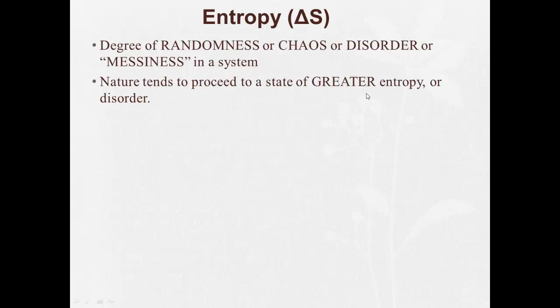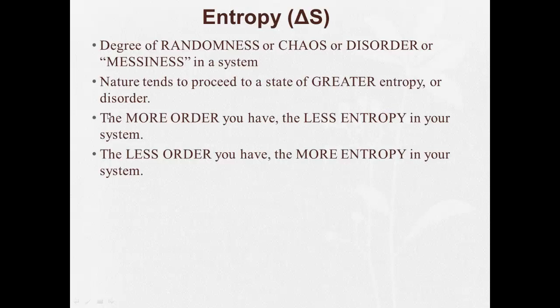It's going to become more disordered, which is a little funny when dealing with more disorder. It seems like a double negative. All right, so the more order you have, the less entropy in your system. The less order you have, more entropy in your system. So more order is like neater. Neater is less entropy. Messier, less order, messier, is more entropy.